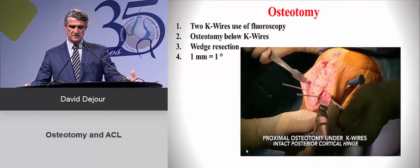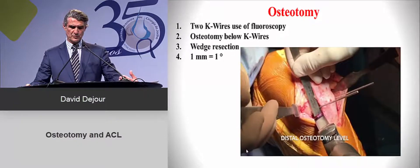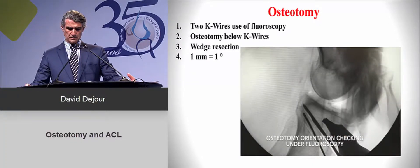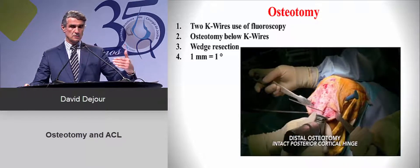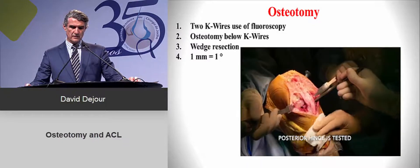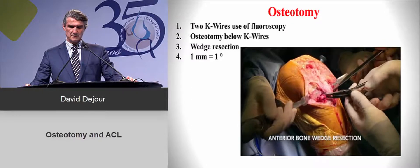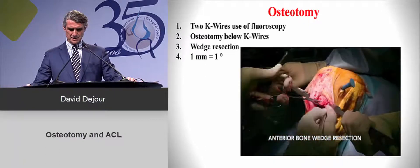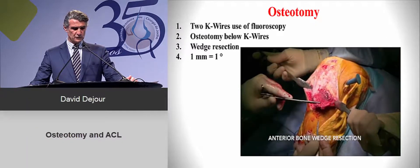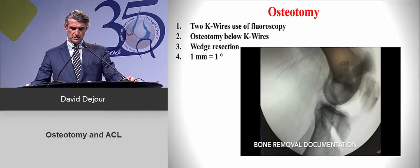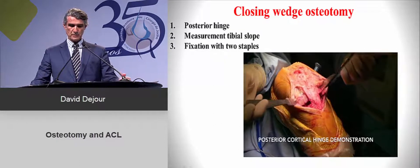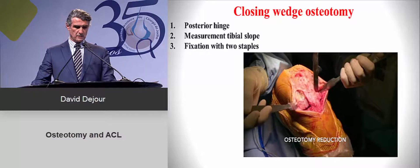The second cut is made — one degree equals one millimeter — and you check on X-ray. You then remove the wedge and close the osteotomy. You slowly move the superior part of the tibia and remove the wedge. Once done, you close the osteotomy and fix it with two staples. It's very stable because you only have compressive forces, so fixation is not a major problem.